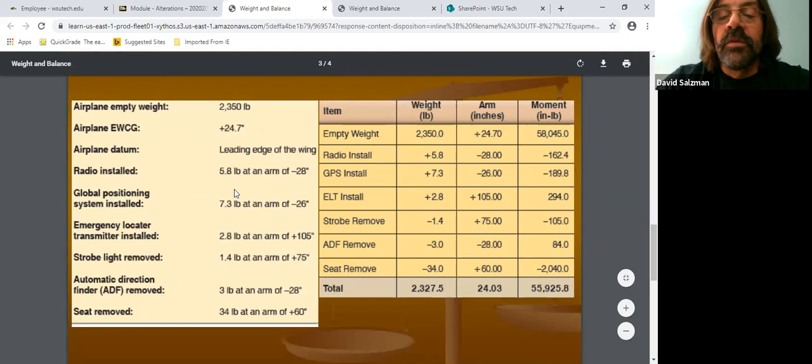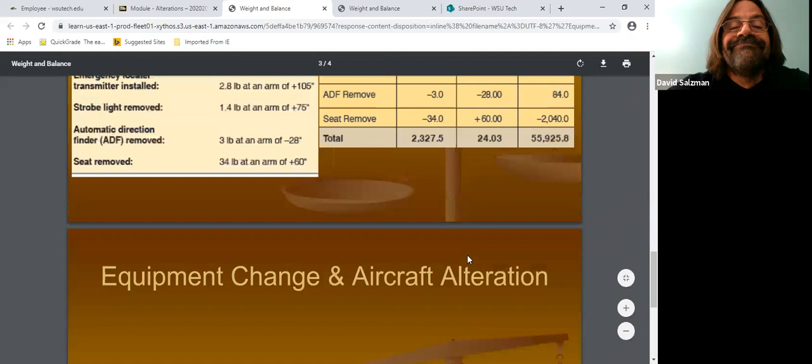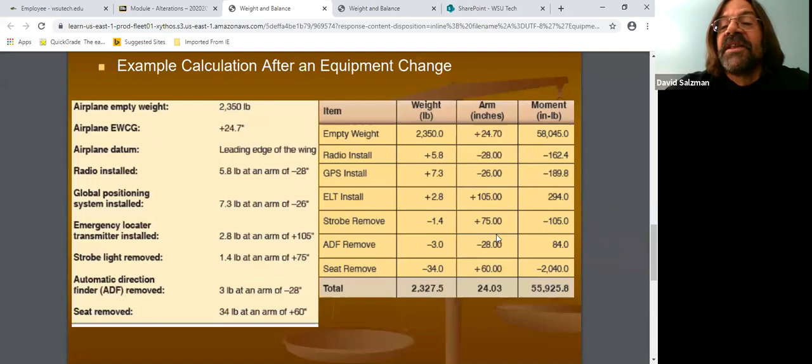It's really, alterations is one of the simplest things we've got to do. And then to find out our new CG, all we have to do is add up our weight column, add up our moment column. And then to get the new empty weight CG, you divide the moment by the weight, and that will give you guys your new empty weight CG.